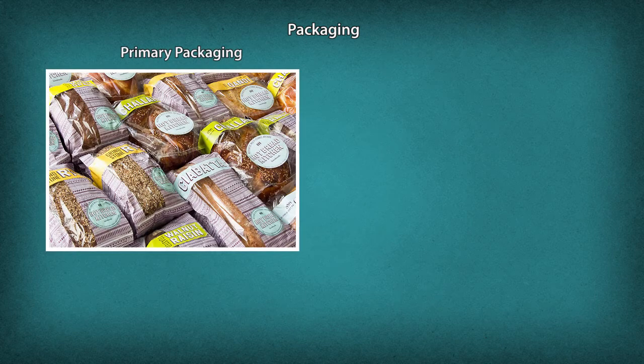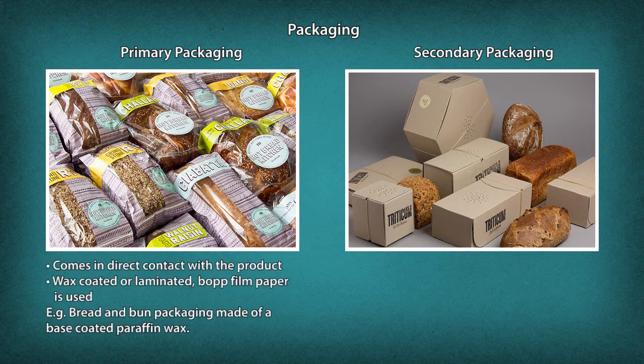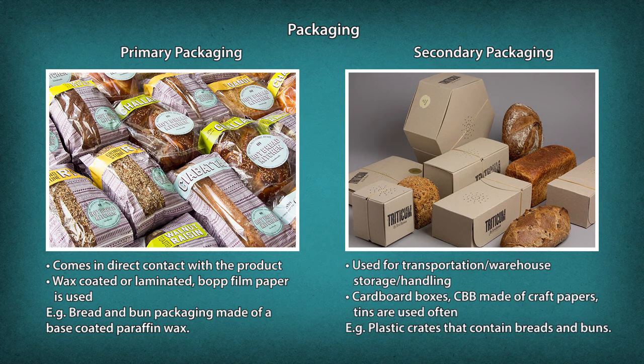Packaging is categorized into primary packaging and secondary packaging. Primary packaging comes in direct contact with the product; wax-coated or laminated BOP film paper is used, and bread and bun packaging is generally made of base-coated paraffin wax. Secondary packaging is used for transportation, warehouse storage and handling; cardboard boxes (CBB) made of craft papers and tins are used often.